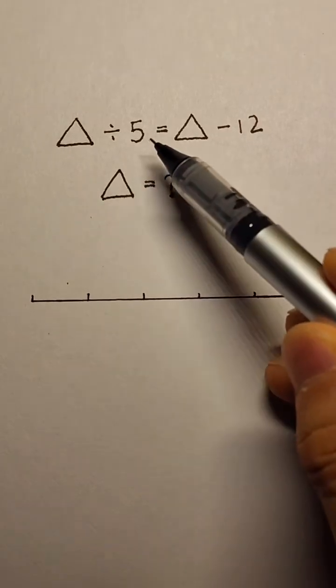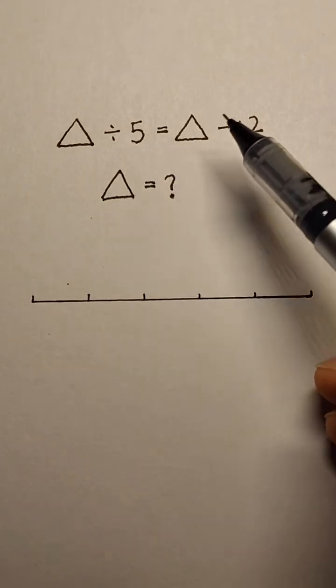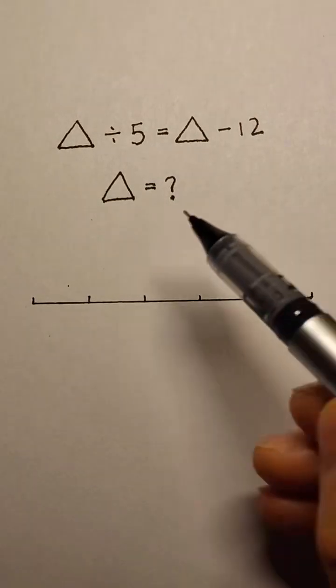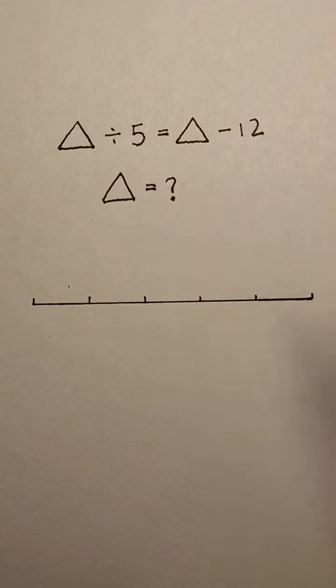Triangle divided by 5 equals triangle minus 12. Find the triangle.